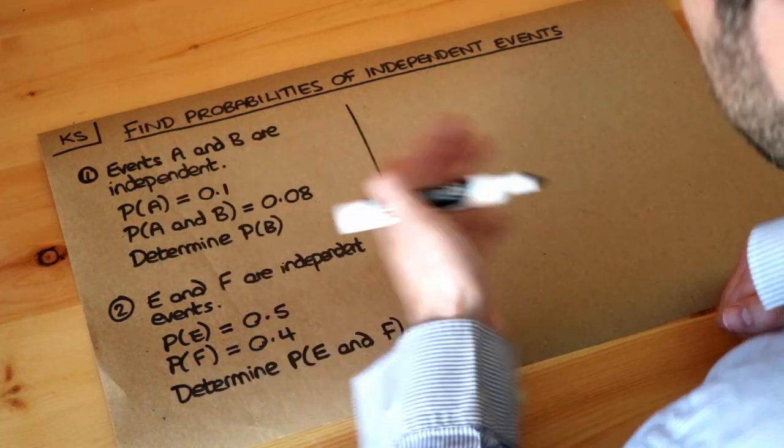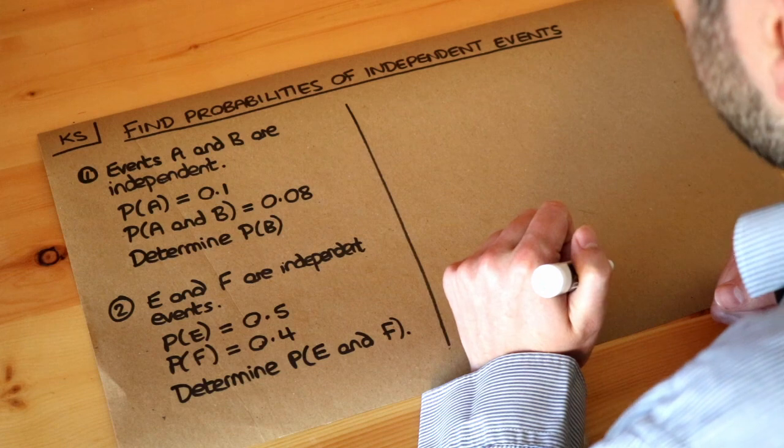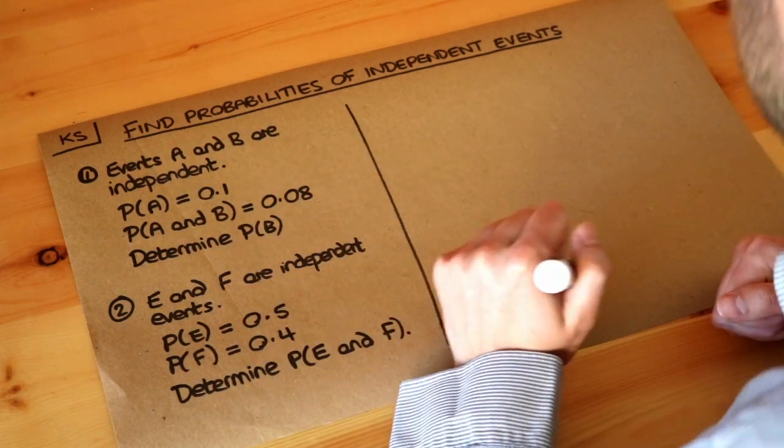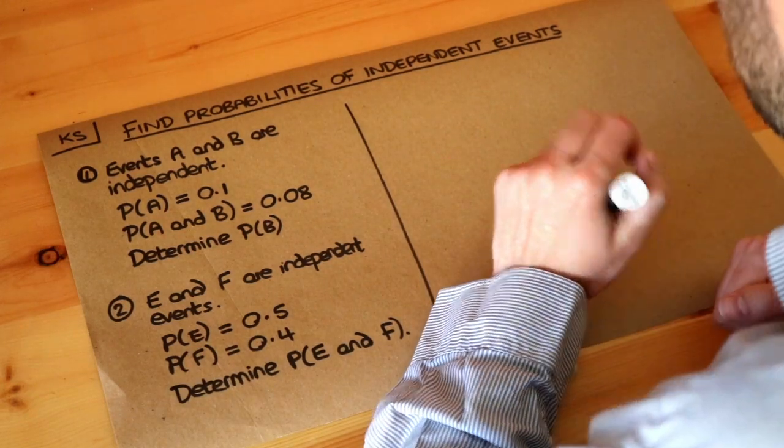Now an event is just doing something and getting particular outcomes. For example, tossing a coin and getting heads, that's an event. If I throw a dice and get an even number, that's an event.